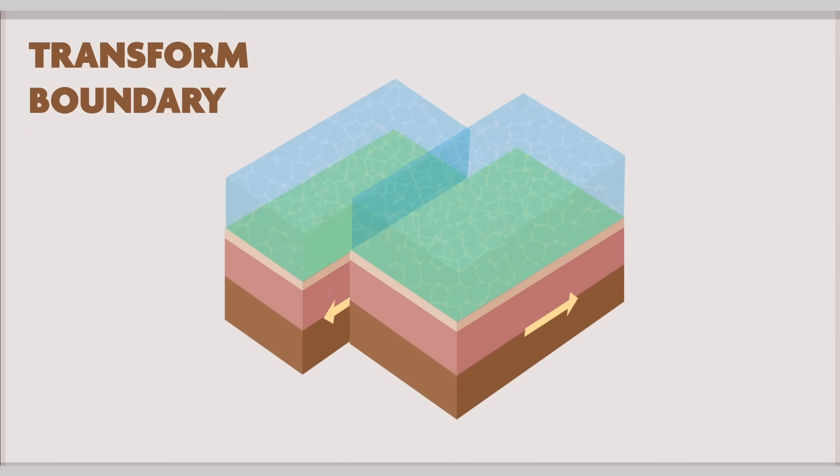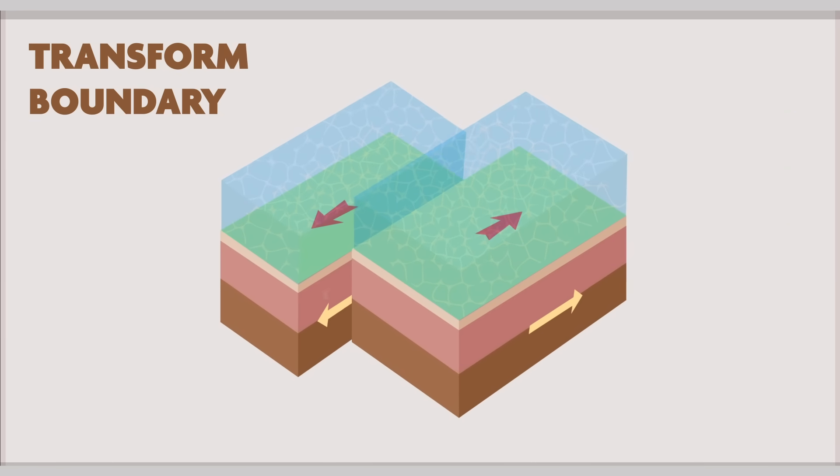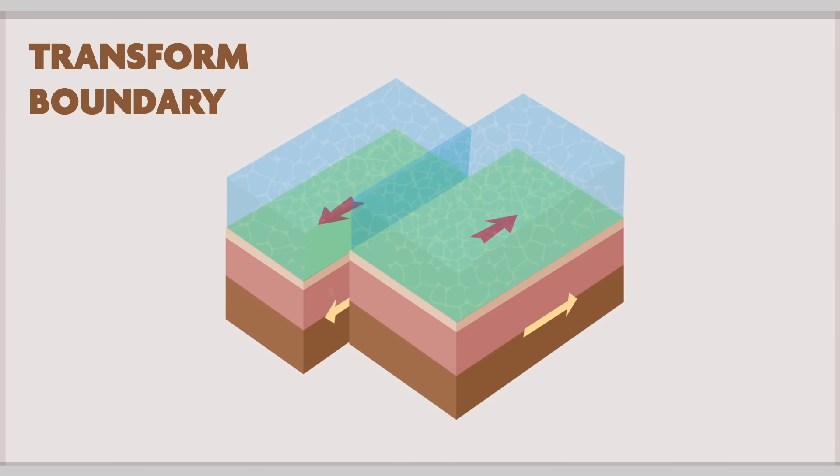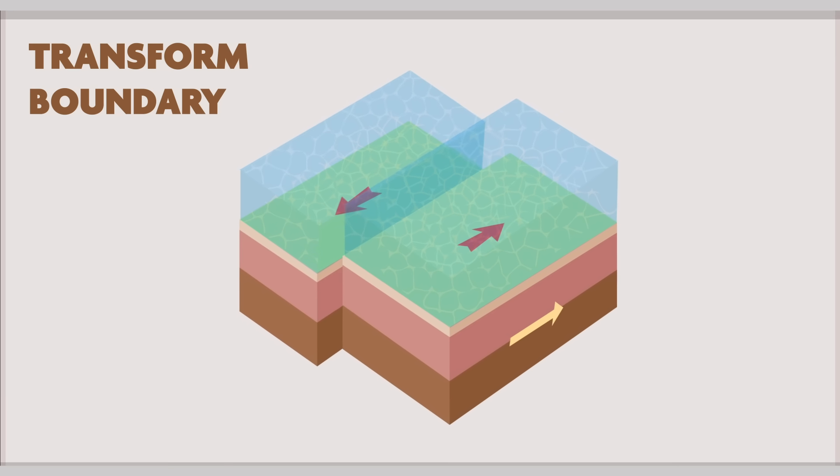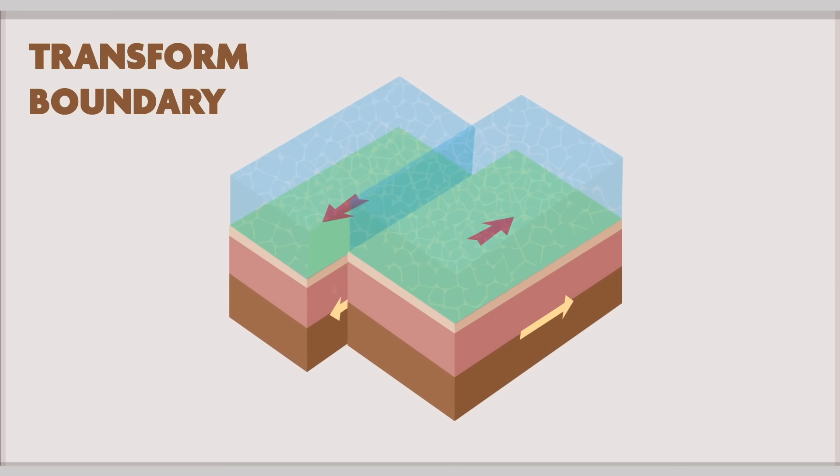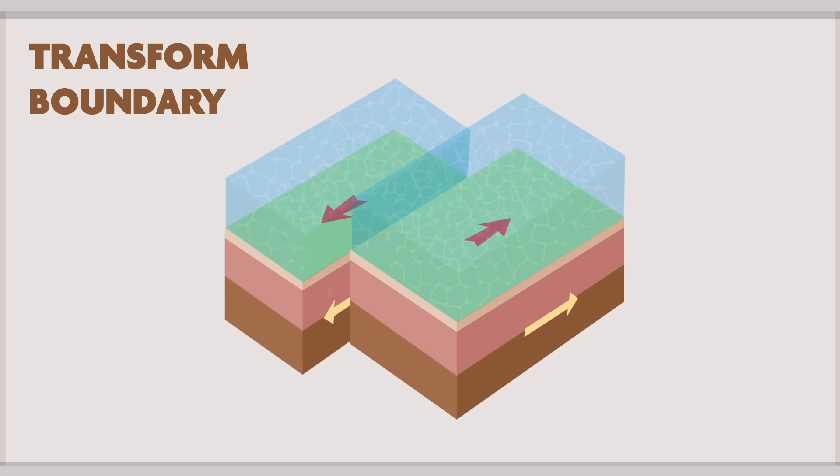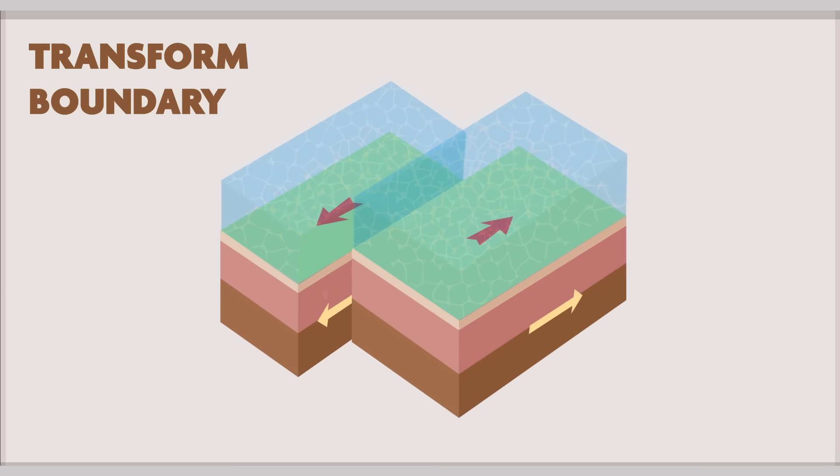Transform boundaries, where plates slide against one another, are characterized by shallow focus earthquakes but do not have any volcanic activity. Without volcanic activity, plates are neither created nor destroyed. This is why this type of boundary is also called a conservative boundary. An example of this is the San Andreas Fault.